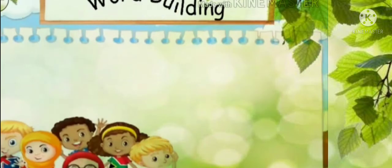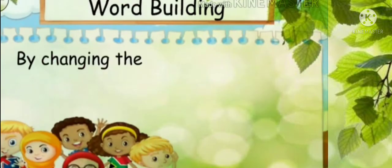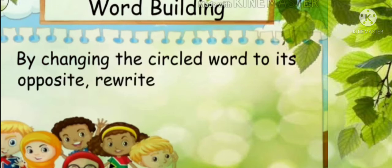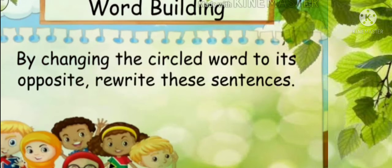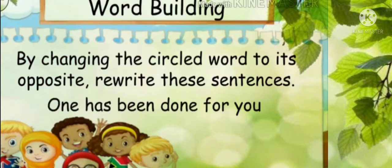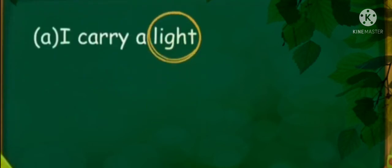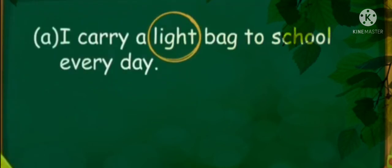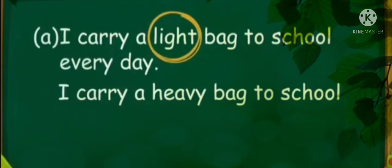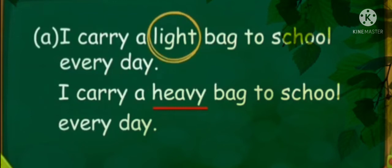Next is word building. By changing the circled word to its opposite, rewrite these sentences. One has been done for you. 'I carry a light bag to school everyday' becomes 'I carry a heavy bag to school everyday.' So the opposite of 'light' is 'heavy.' Did you understand?